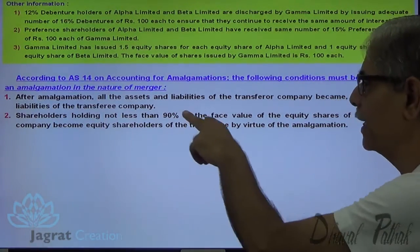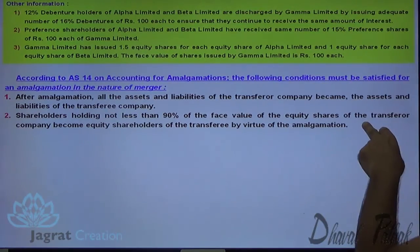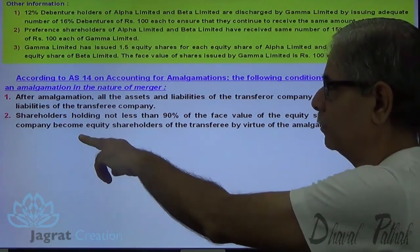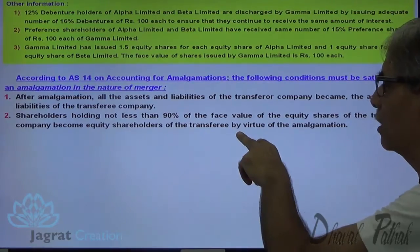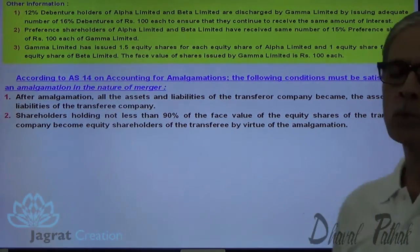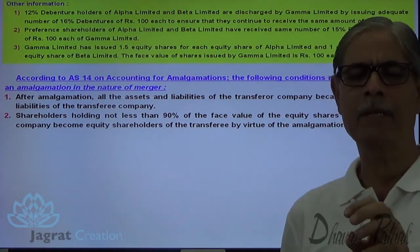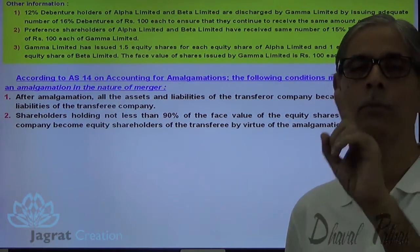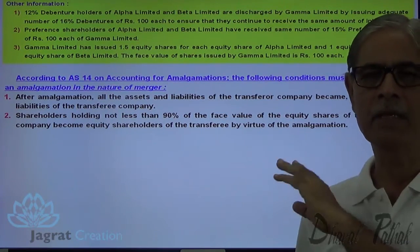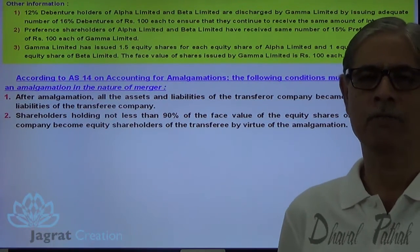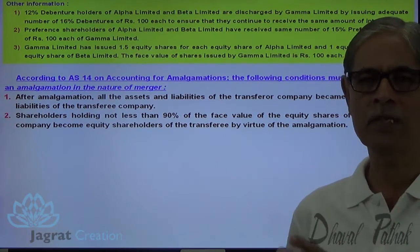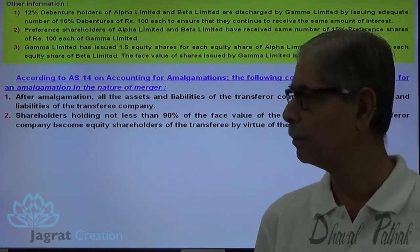Shareholders holding not less than 90% of the face value of the equity shares of the transferor company must become equity shareholders of the transferee company. So minimum 90% of the shareholders of the vendor company should become shareholders of the purchasing company. In the given case, all 100% of shareholders of the transferor company become shareholders of the purchasing company.